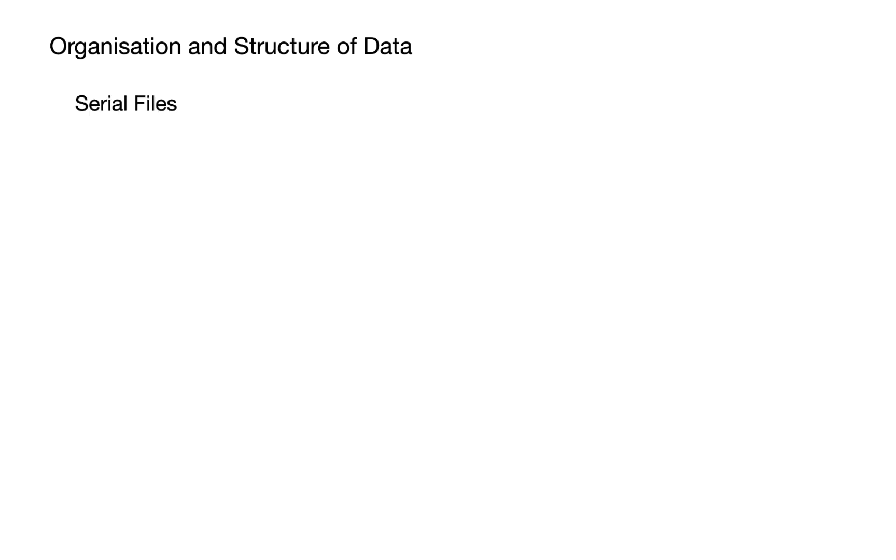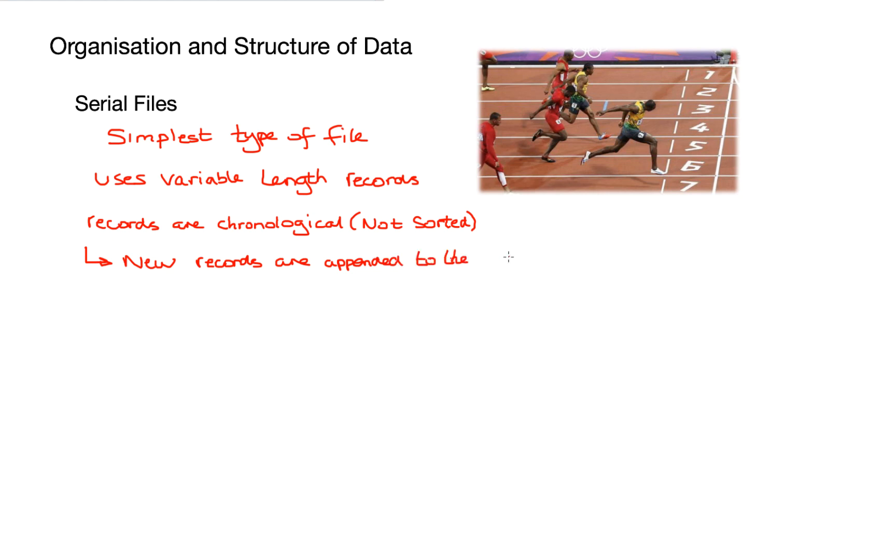So now let's have a look at our different files. We have serial files, sequential files, index sequential files, and direct or random access files. The first one we're going to look at is serial files. They are the simplest type of file. They use variable length records, and records are chronological. They are not sorted. So whatever comes into the file first gets put at the start. The data that comes in is appended to the end of the file. There is no specific place for the data as it comes in.